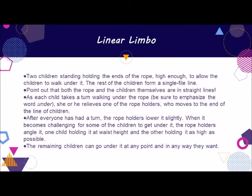For linear limbo, you'll need a long rope, with two children standing holding the ends of the rope high enough to allow the children to walk under it. The rest of the children form a single file line. Point out that both the rope and the children themselves are in straight lines. As each child takes a turn walking under the rope, be sure to emphasize the word under, and then she or he relieves one of the rope holders who moves to the end of the line.